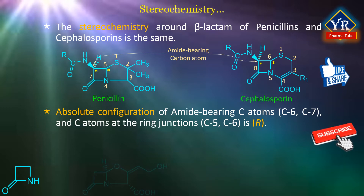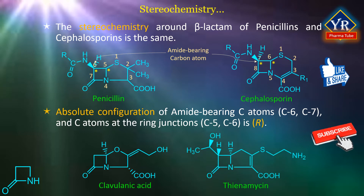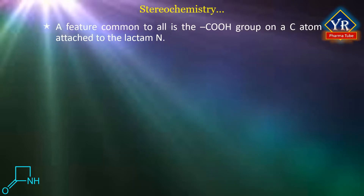The ring juncture stereochemistry of clavulanic acid and the natural carbapenems, i.e. thionamycin and its analogs, is the same as that of the penicillins and cephalosporins. The absolute configuration of the ring junction carbon atom is R. This position is without a substituent on natural beta-lactams and synthetic analogs with biological activity. A common feature to all is the carboxyl group on a carbon atom attached to the lactam nitrogen.